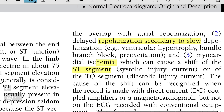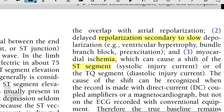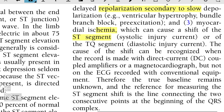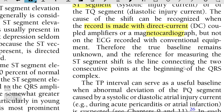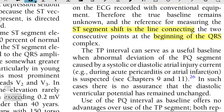The cause of the shift can be recognized when the recording is made with a direct current-coupled amplifier, such as the magnetocardiograph, but not on the ECG recorded with conventional equipment. Therefore, the true baseline — the line connecting two consecutive points at the beginning of the QRS complex — is the ST segment shift.